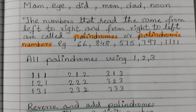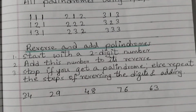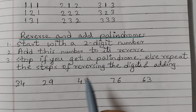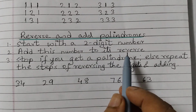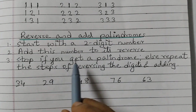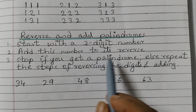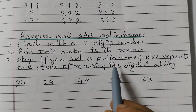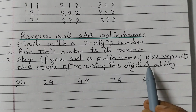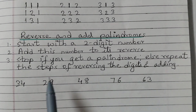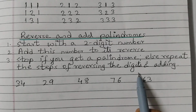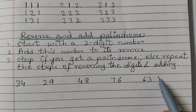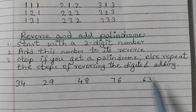The next part is reverse and add palindromes. Here we start with a two-digit number, add it to its reverse, and stop if we get a palindrome. Otherwise, we repeat the steps of reversing the digits and adding. Let us understand this using examples.